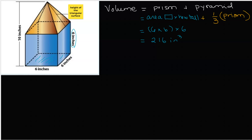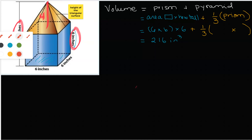Now the yellow part on top — the volume of a pyramid is one-third of whatever that straight-up solid is. We would say area of the base shape multiplied by how tall. The height is not the slanted side; that slanted side is the height of the triangular surface. The height of the pyramid goes from the base to the apex, which is 10 minus 6, so that part is 4.